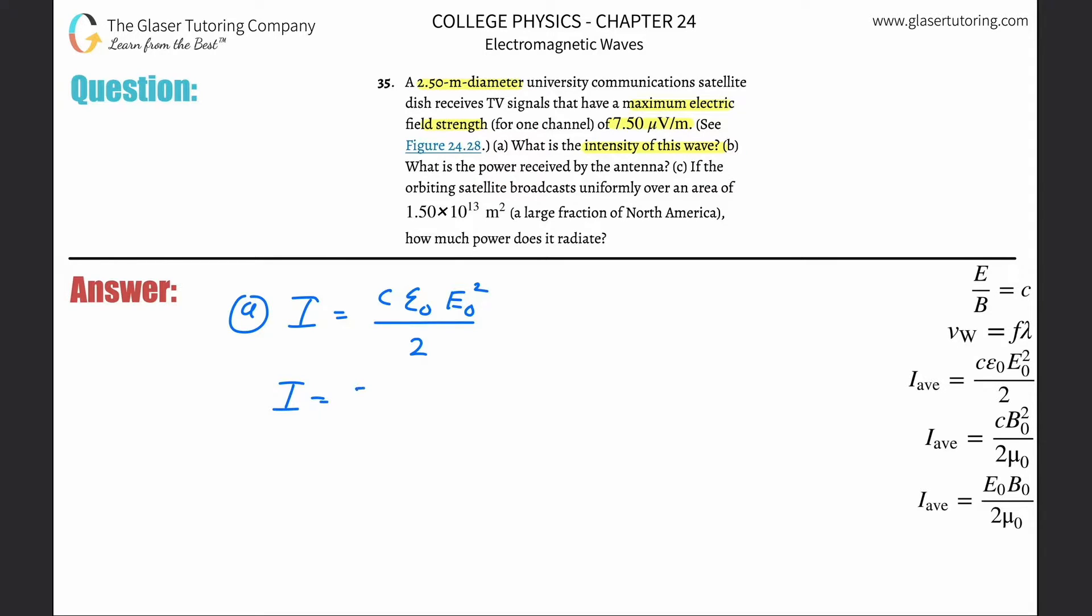These are all constants except for the electric field. The electric field they told us was in microvolts, but we need that in volts. So take the 7.5 times 10 to the negative 6, don't forget to square it, divide that whole thing by 2.